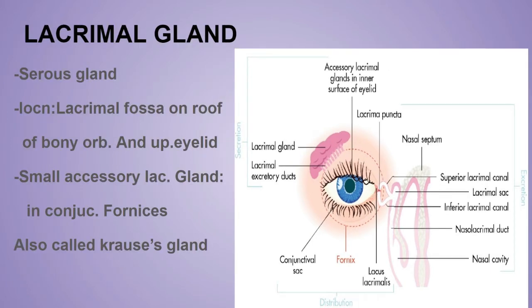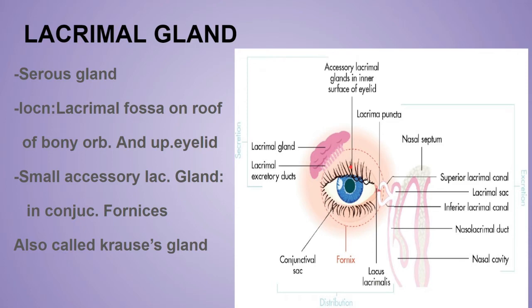The lacrimal gland is a serous gland which produces lacrimal fluid. It is situated mainly in the lacrimal fossa on the anterior part of the bony orbit and partly on the eyelids. There are also small accessory lacrimal glands, also known as the Krause glands, present in the conjunctival fornix.